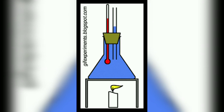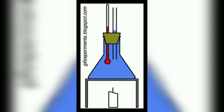To demonstrate expansion of liquid, we perform this experiment: take a conical flask with a cork having two holes — one for a thermometer and one for a capillary tube — and a burner. Place the flask on a mesh over the burner and begin heating. You will observe that as the temperature increases, the level of liquid inside the capillary tube also rises. We conclude that liquid expands on heating.